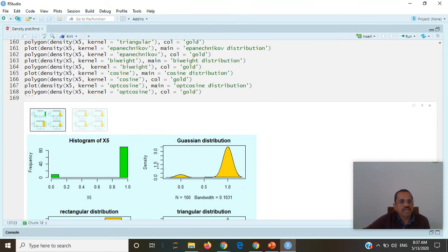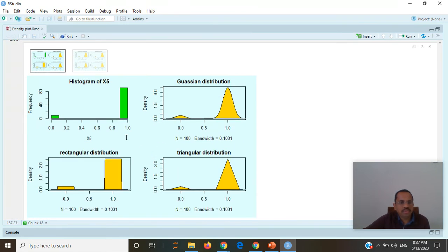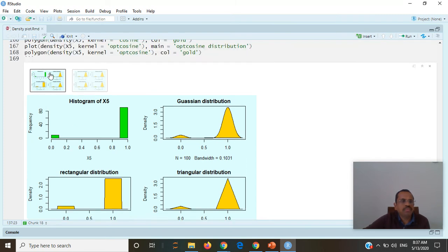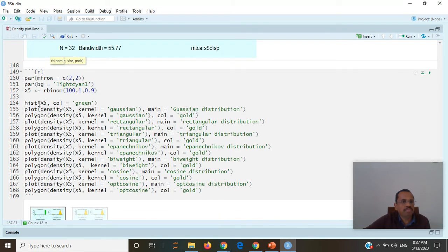Then when we use density plot there are many type of distributions we can use. What I created in this example is I created randomly distributed and binomial numbers, 100 numbers. Each number has one trial so it will be 0 or 1 and 0.9 is a proportion.